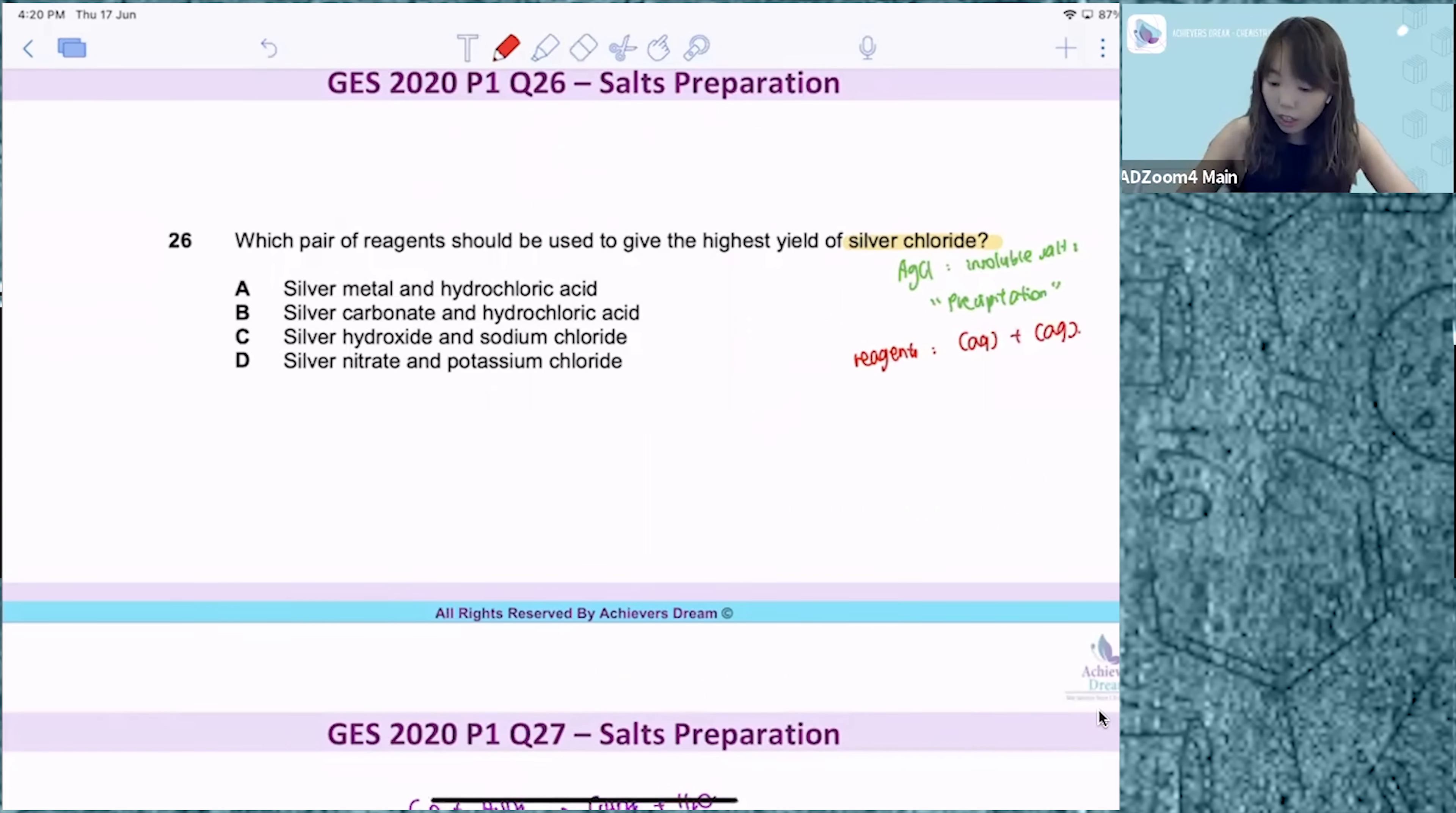For option A, silver metal and hydrochloric acid, straight away this is out. Why? Because silver metal is unreactive. It will not react with the acid to form any products.